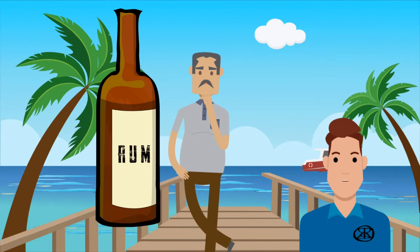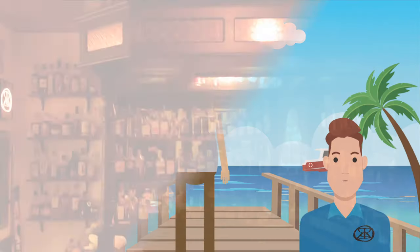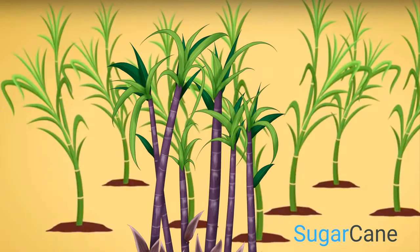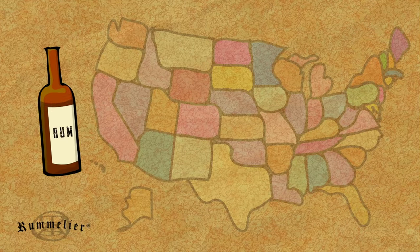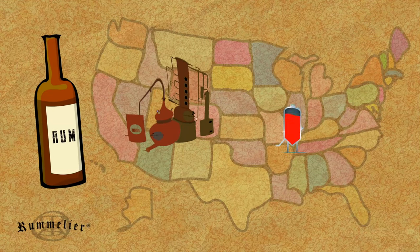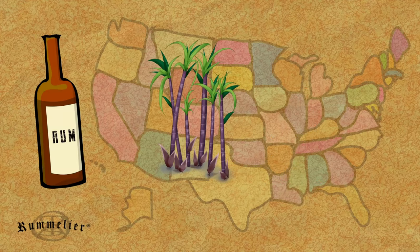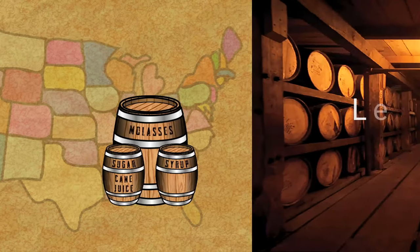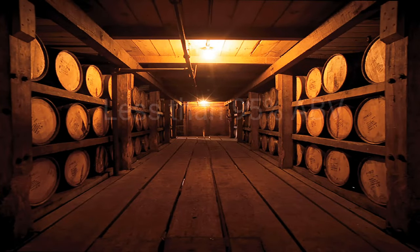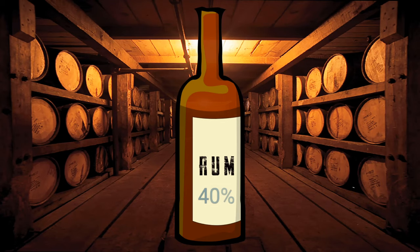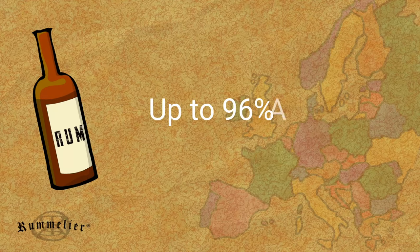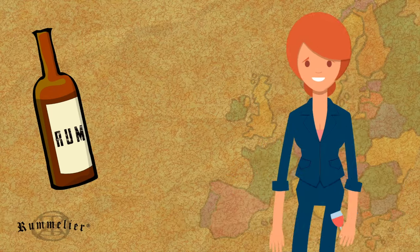What makes rum rum? The difference between rum and other spirits is the plant from which it's made. In the United States, the definition of rum is a spirit distilled from the fermented juice of sugarcane, sugarcane syrup, sugarcane molasses, or other sugarcane byproducts at less than 95% ABV and bottled at least 40% alcohol by volume. In Europe, rum can be distilled up to 96% ABV, but it still must retain the taste and aroma of rum.